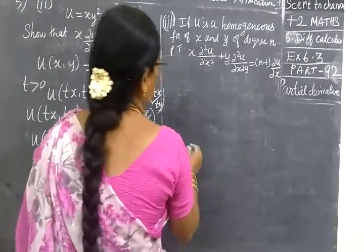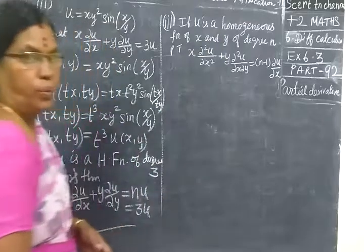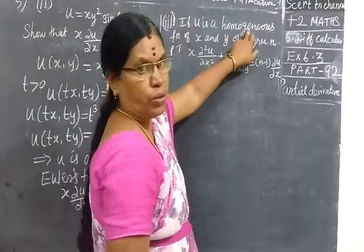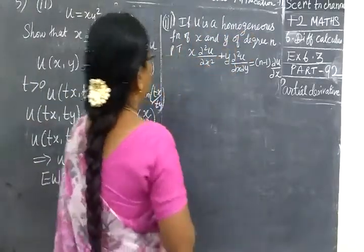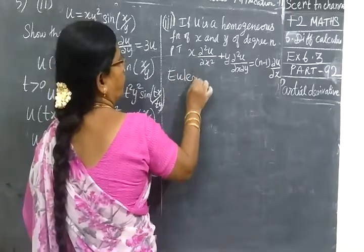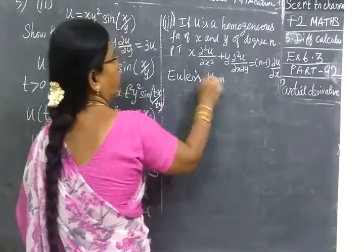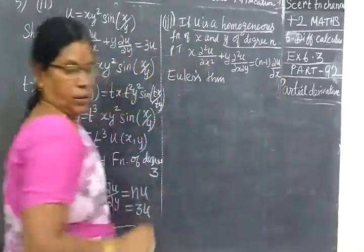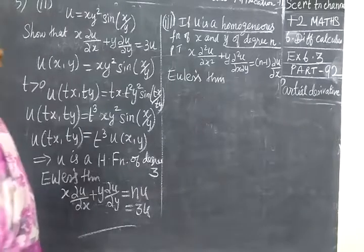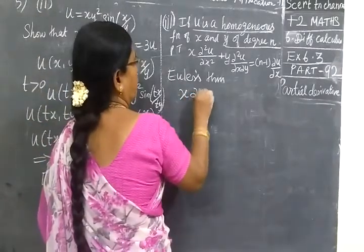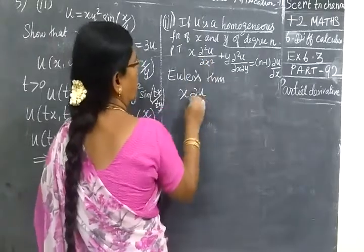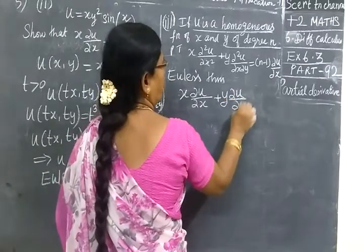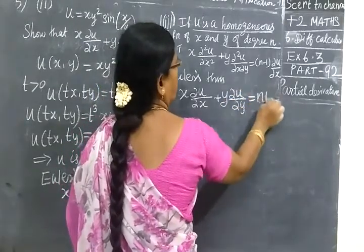Next also, same type. It is a homogeneous function. This is the homogeneous function. We can write Euler's theorem. By Euler's theorem, since u is a homogeneous function of degree n, we write: x into dou u by dou x, y into dou u by dou y equal to nu.